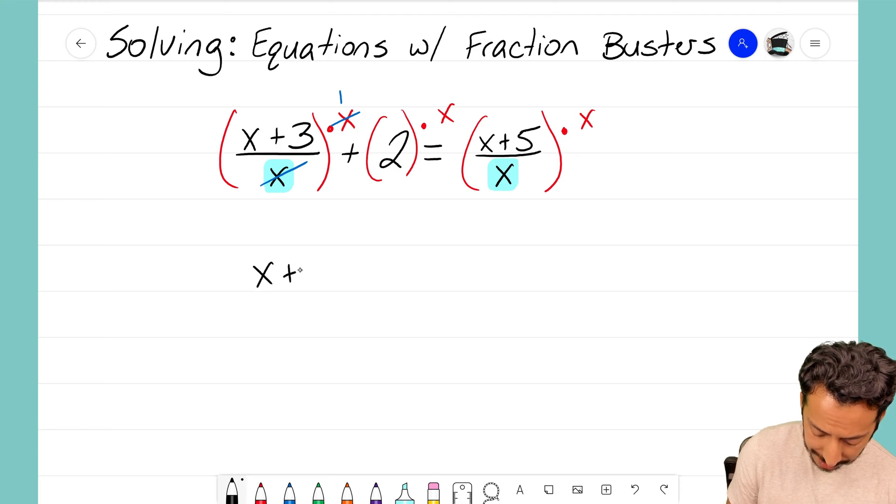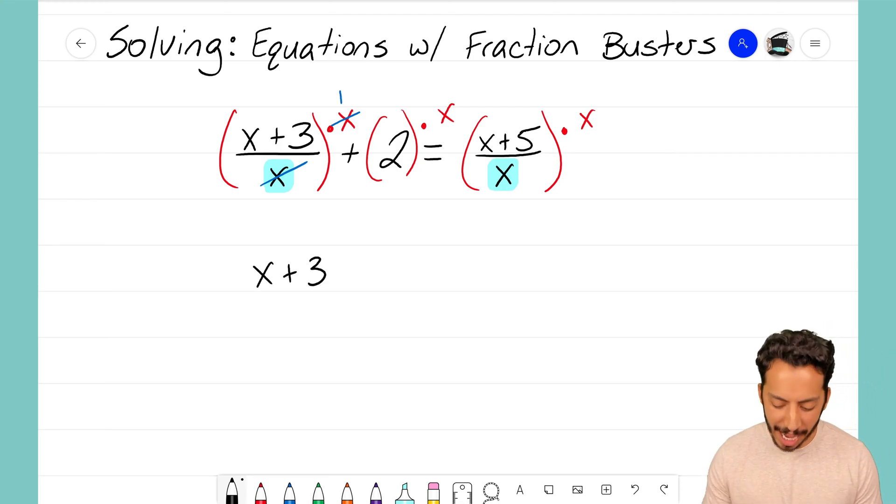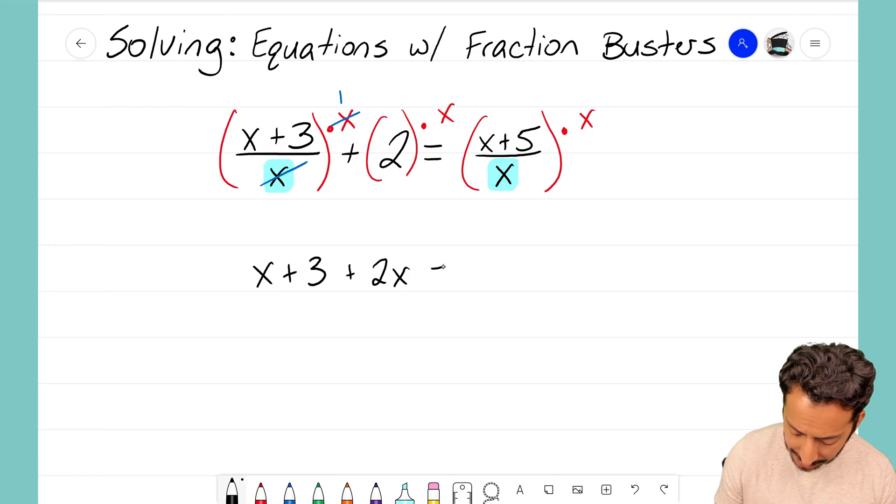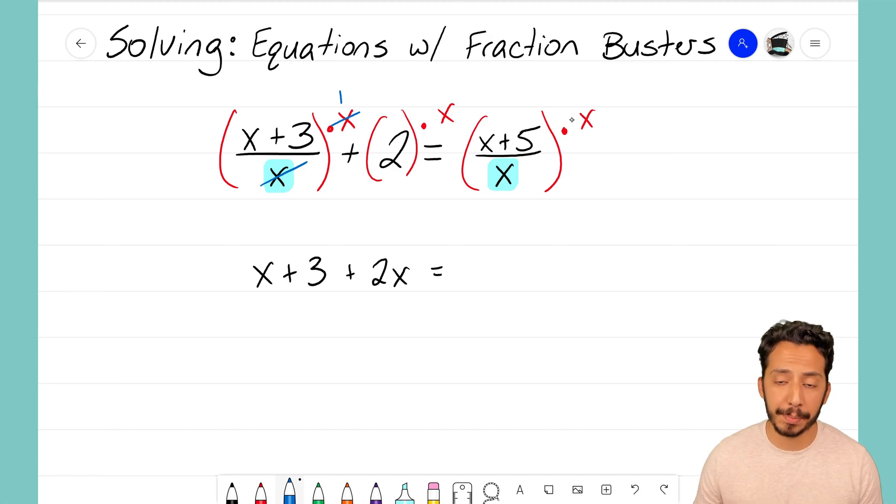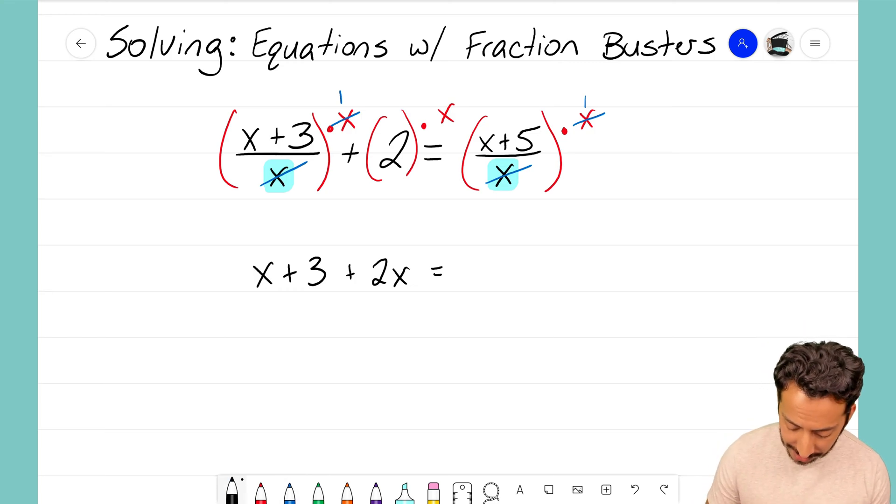Look how that first term, this messy fraction with an x on the top and x on the bottom, ends up being simplified to just x + 3 by multiplying it by x the variable. Let's keep moving on. This is not a fraction so we just got to multiply it: 2 times x makes 2x. Equals, again, look what we have: x in our denominator being multiplied by x. Well x goes into x one time, so I'm just left with the numerator x + 5.